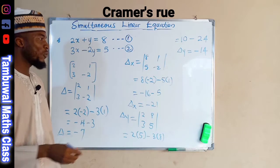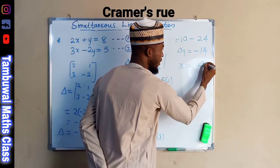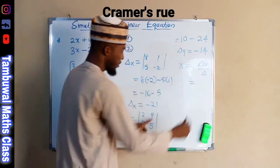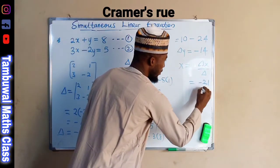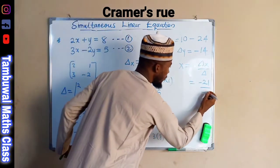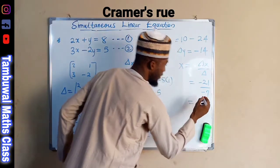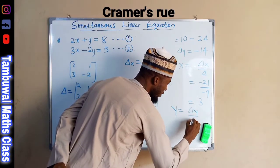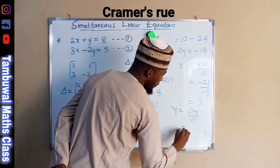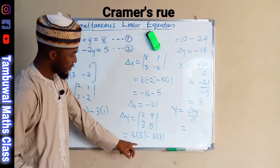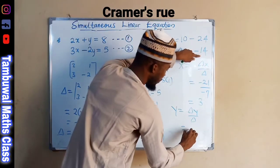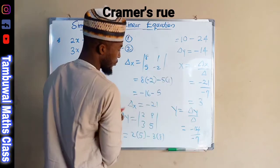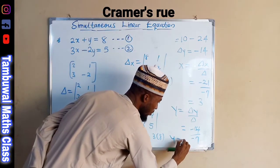So the determinant with respect to Y is negative 14. To find X, we divide the determinant with respect to X by the main determinant: negative 21 divided by negative 7, which equals positive 3. To find Y, we divide the determinant with respect to Y by the main determinant: negative 14 divided by negative 7, which gives Y equals positive 2.